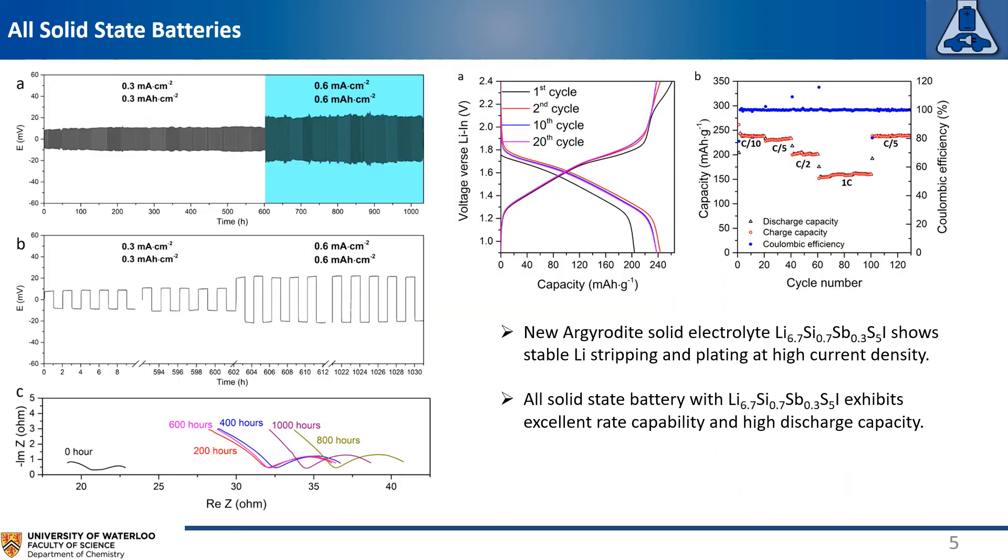Furthermore, the silicon substituted materials show stable lithium stripping and plating at high current density. The stable overpotential and somewhat stable EIS measurements indicate a stable interface formation between lithium metal and solid electrolyte.